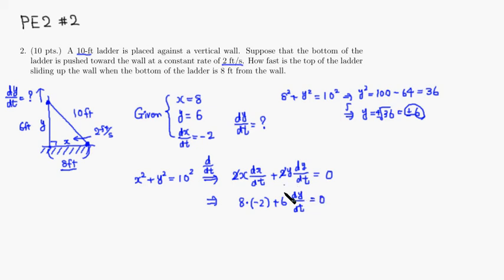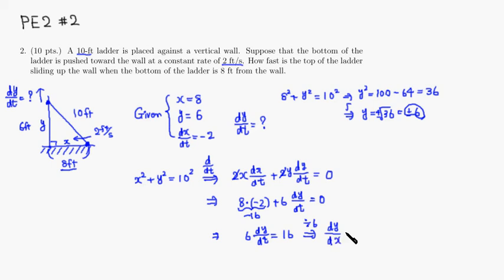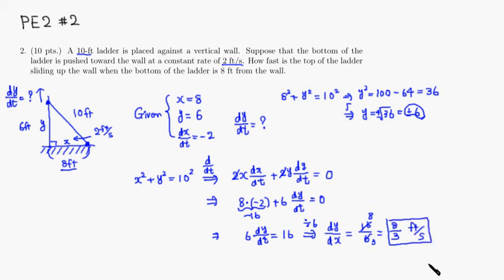We can easily solve this. So 8 times negative 2 is negative 16. Put it on the other side, so it's 6 times dy/dt equals positive 16. Then divide through by 6, so dy/dt equals 16 divided by 6, which simplifies — dividing by 2 — to 8 thirds. So 8/3 is the rate of change, in feet per second. The top of the ladder is sliding upward at a rate of 8/3 feet per second.